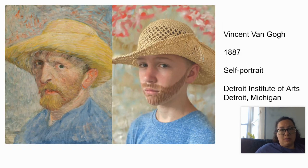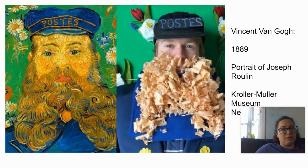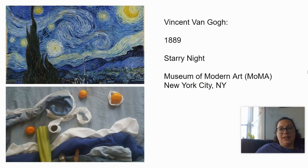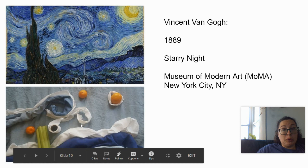Vincent van Gogh — using some face makeup, a straw hat, and some kind of backdrop. We've got van Gogh with some kind of napkin creating the bandage, and found similar clothes. This here looks like the shavings you'd use in a hamster or gerbil cage. We've got Starry Night — if you don't want to be in the picture, this is recreated with jeans and toilet paper.